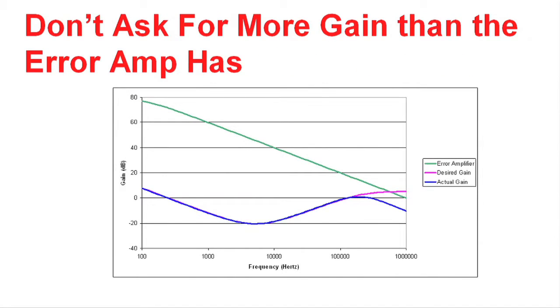Another common error that people make in the design of error amplifiers is that they ask the amplifier to provide more gain than it actually can. What we have on this chart is three sets of curves. The green curve is the error amplifier gain versus frequency. The purple curve is what our designer asked the error amplifier to do. And then the blue curve is actually what it can do.